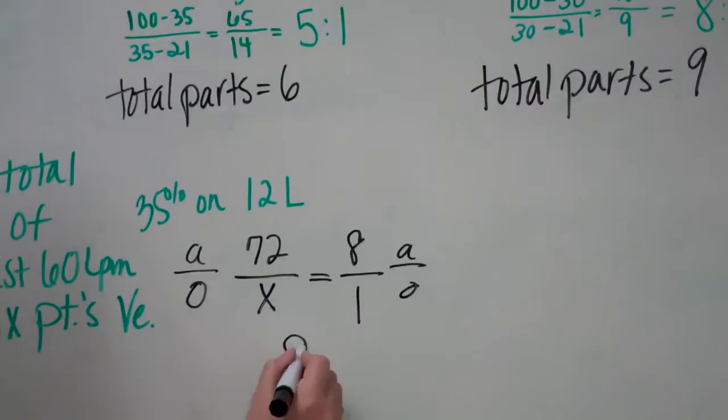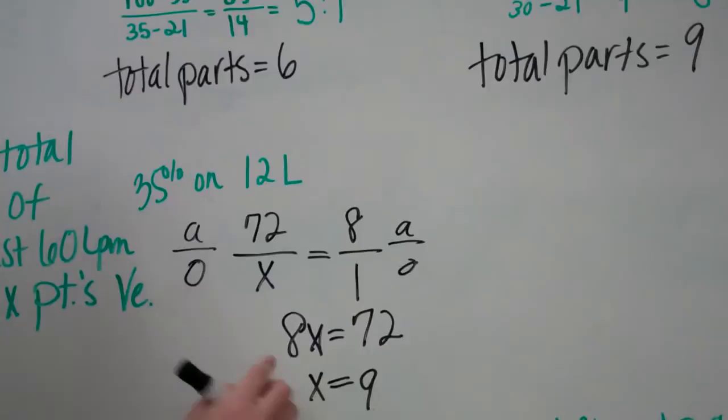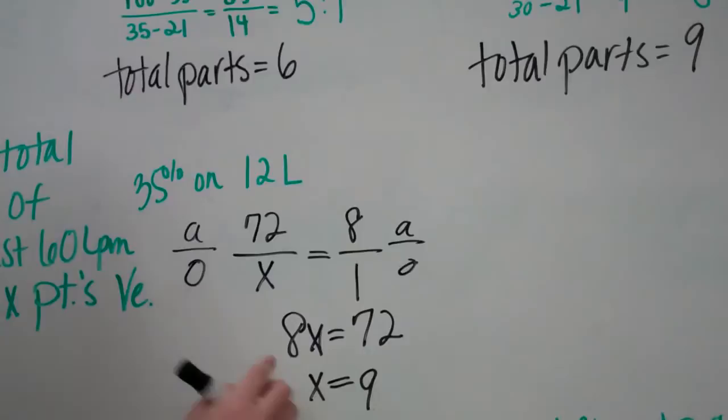If I cross multiply, I get 8X equals 72, X equals 9. So my X equals 9 is under the oxygen part, so it's how much oxygen I want to bleed into the system.